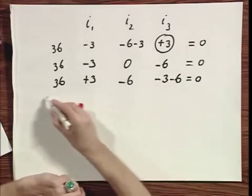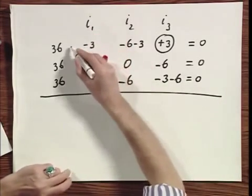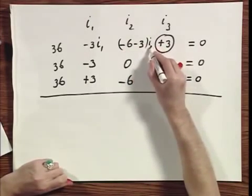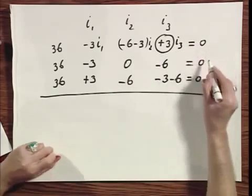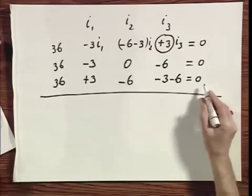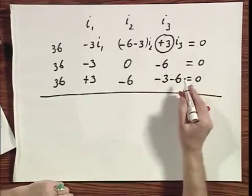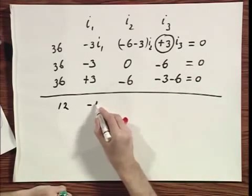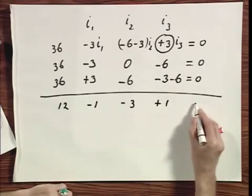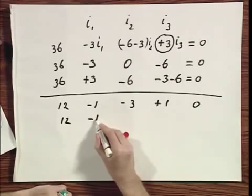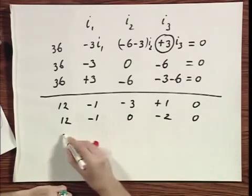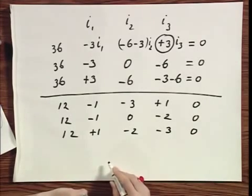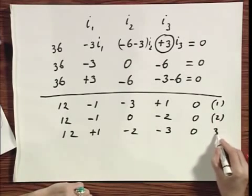Well, three equations with three unknowns. You have to multiply them, of course. So, this is 36, minus 3 I1, minus 9 I2, plus 3 I3, equals zero. And you can solve these three equations with three unknowns. I have a little bit extra time, and I will help you a little, although I'm not going to solve them for you. I'm going to divide them all by three. So, I will get 12, minus 1, minus 3, plus 1, zero, minus 2, zero, 12, plus 1, minus 2, minus 3, zero. I call this equation 1, equation 2, and equation 3.